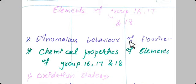The reasons why fluorine's properties differ from other members of the group are: first, fluorine has a small atomic size; second, fluorine has high electronegativity; third, there is an absence of d-orbitals in the valence shell; and fourth, low F-F bond dissociation enthalpy. Because of all these four reasons, fluorine differs from the other members of the halogen group.